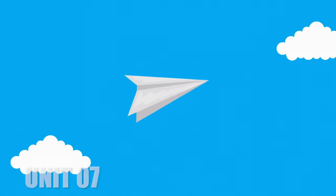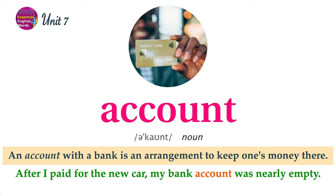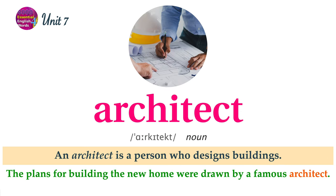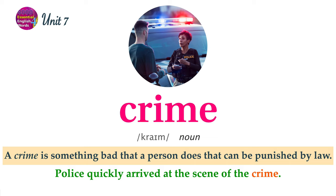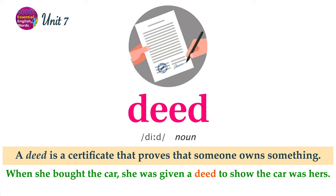Unit 7 Word List. An account with a bank is an arrangement to keep one's money there. After I paid for the new car, my bank account was nearly empty. An architect is a person who designs buildings. The plans for building the new home were drawn by a famous architect. To conceal something means to hide it. You should conceal your money so no one can take it from you. A crime is something bad that a person does that can be punished by law. Police quickly arrived at the scene of the crime. A deed is a certificate that proves that someone owns something. When she bought the car, she was given a deed to show the car was hers.